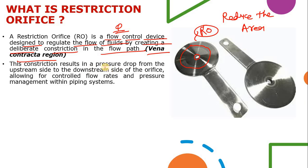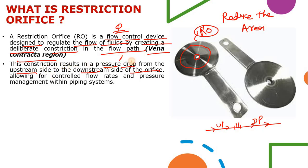This constriction results in a pressure drop from the upstream side to the downstream side of the orifice, allowing for control of flow rate and pressure management within the piping system. When fluid flows from left to right, the delta P is created because of the area reduction. Because of that, you are controlling the fluid flow rate and pressure.